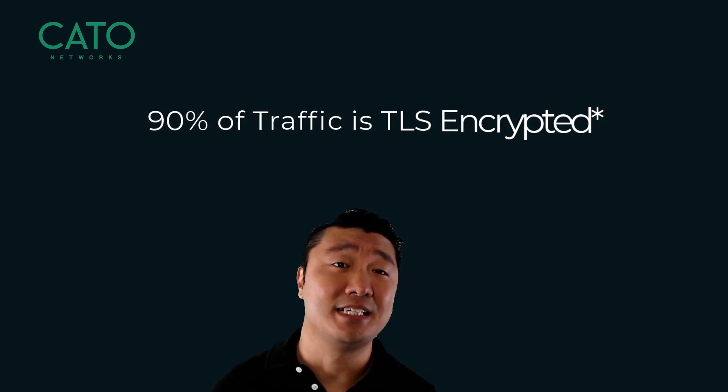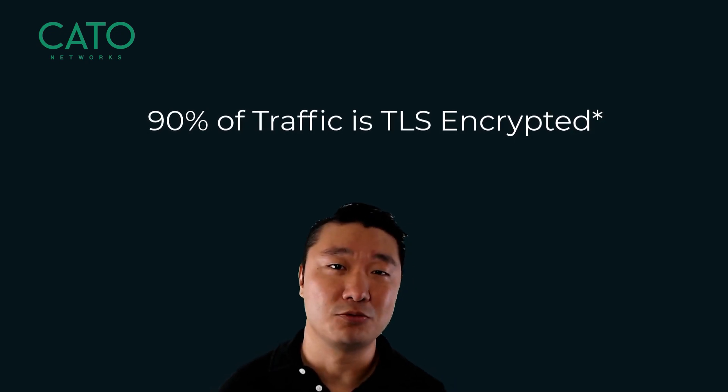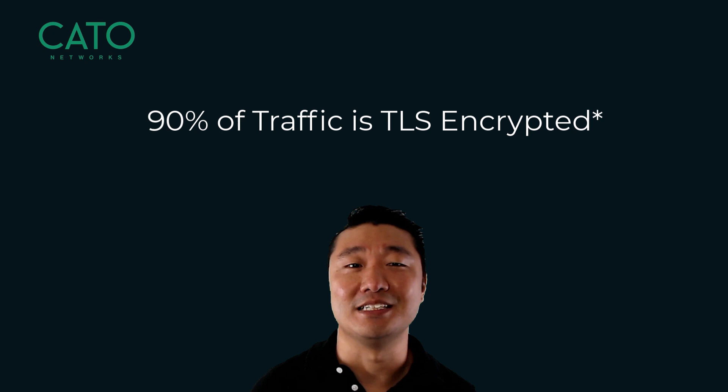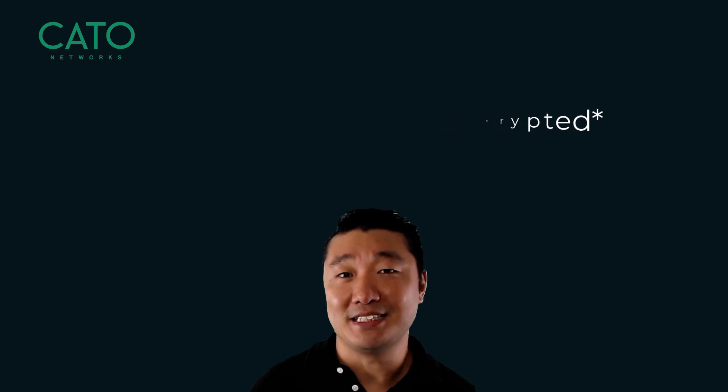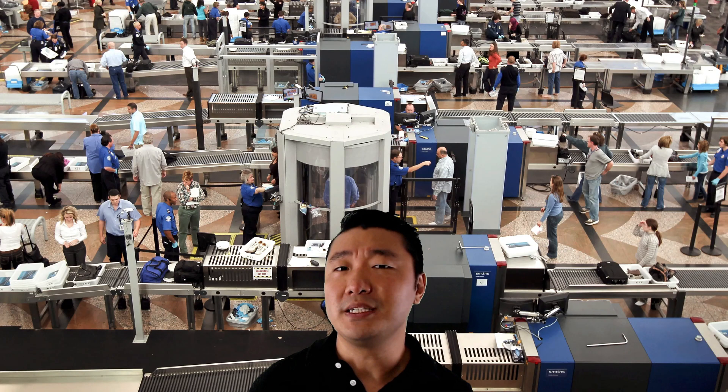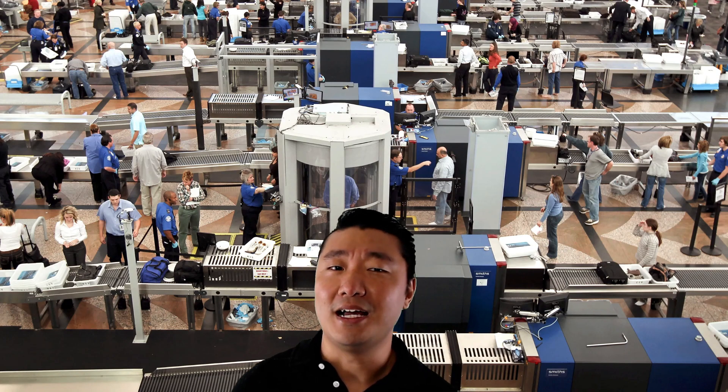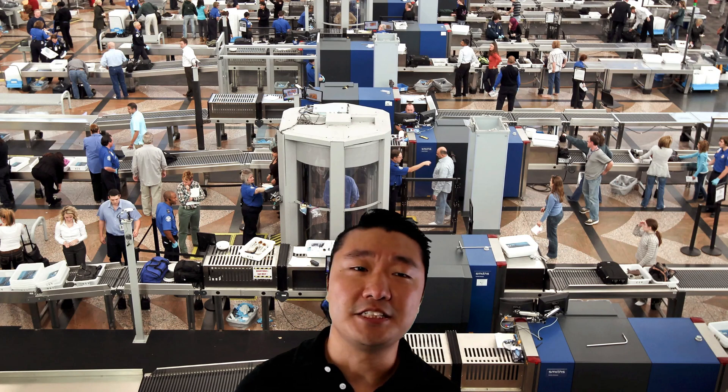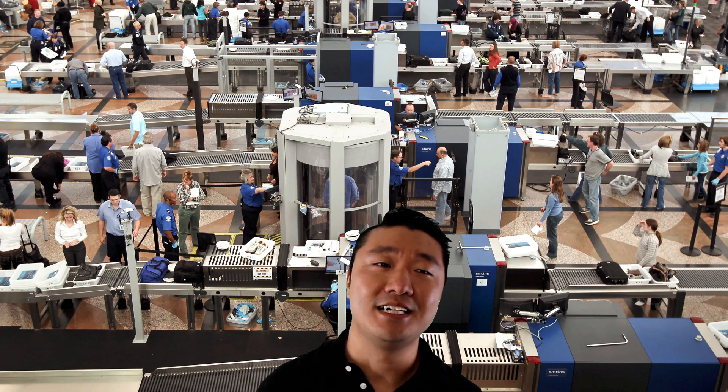It's estimated that 90% of the world's web traffic is TLS encrypted. This means that if you're not decrypting this traffic in order to inspect it, you have a huge security blind spot. It's a little bit like going to the airport and having them only check one out of every 10 passengers that gets on a plane.